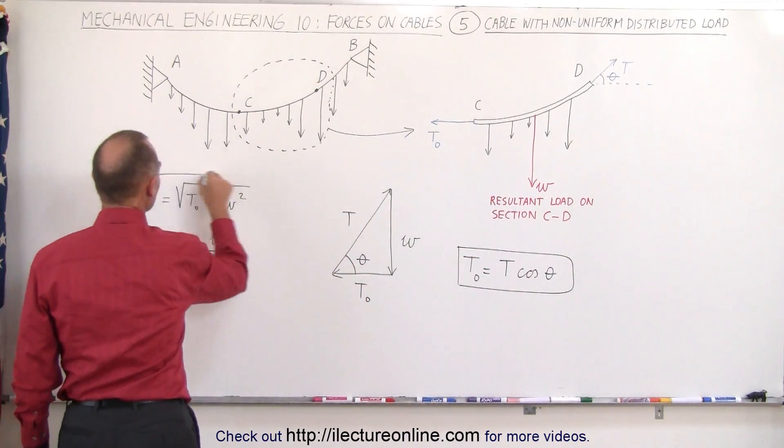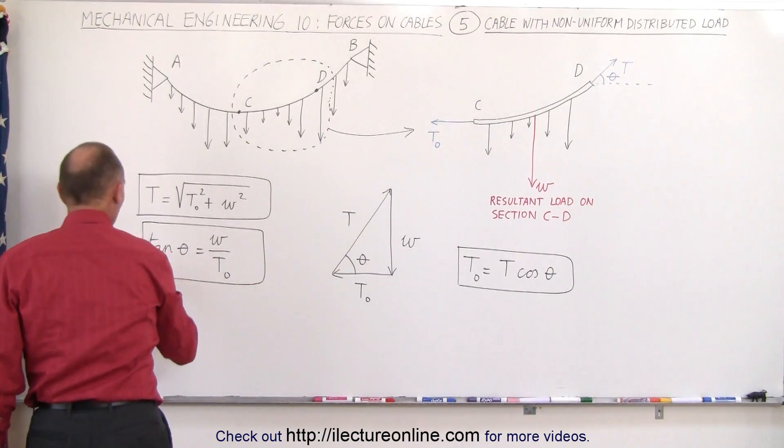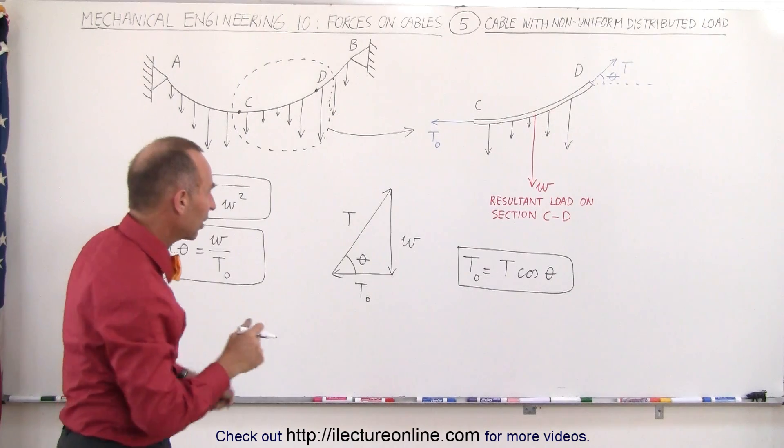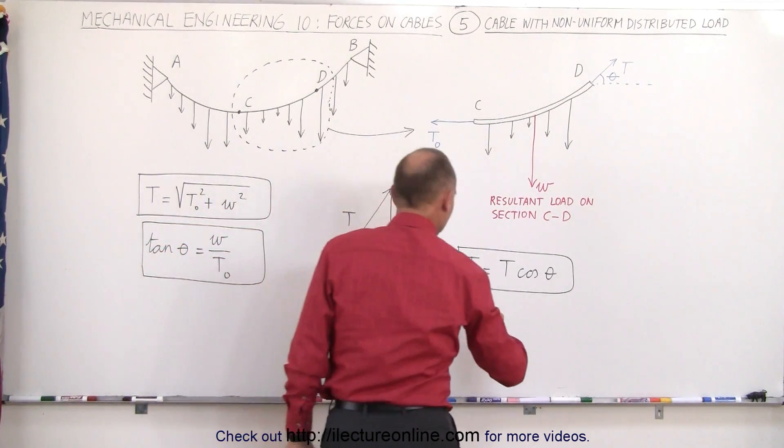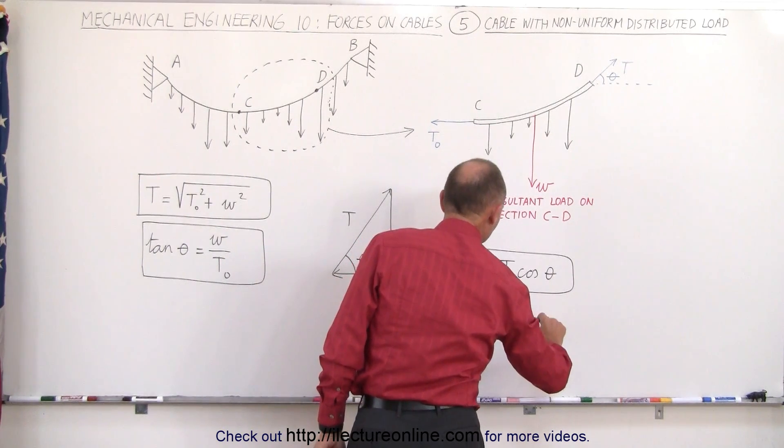So we have that equation, we have this equation, and we have this equation, and then maybe one more. How do we express W, the weight of the sections relative to the tension here? We can say that the weight of the load, W, is equal to the hypotenuse T times the sine of theta.